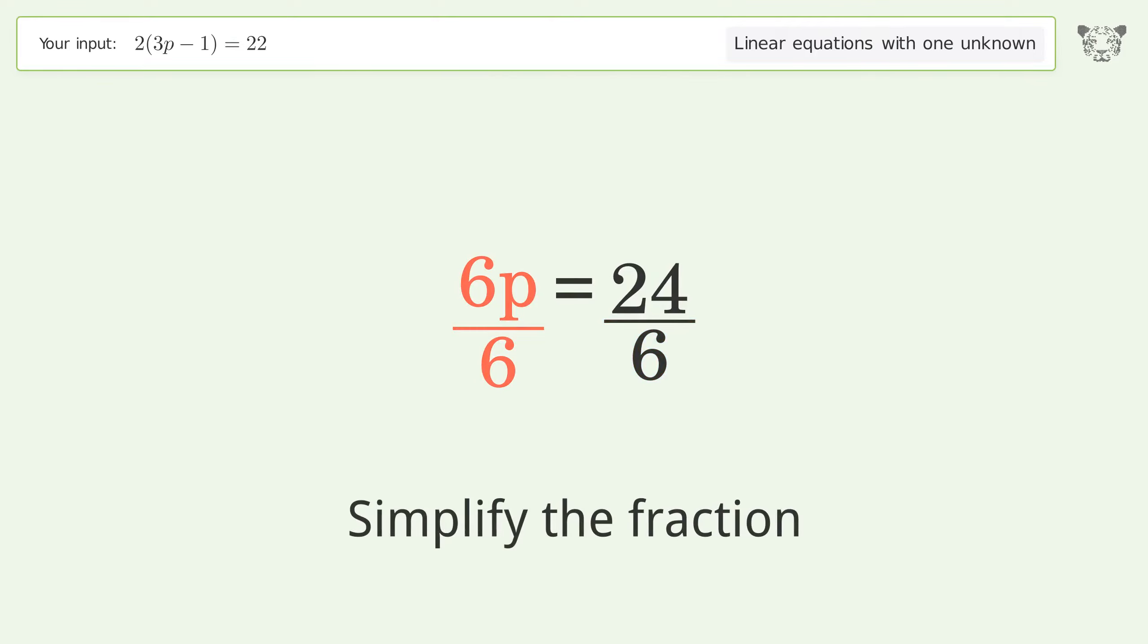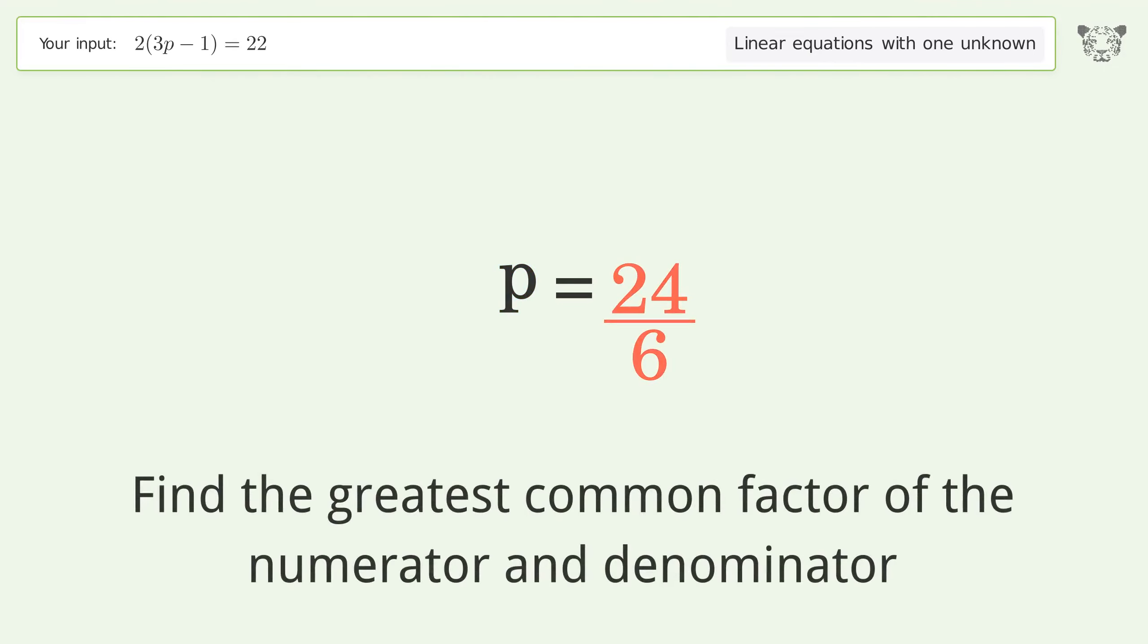Isolate the p. Divide both sides by 6. Simplify the fraction.